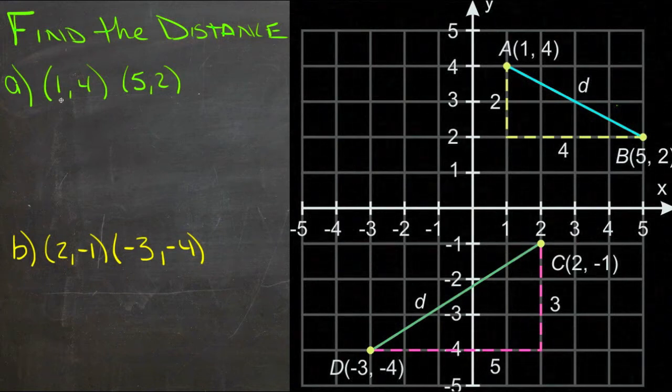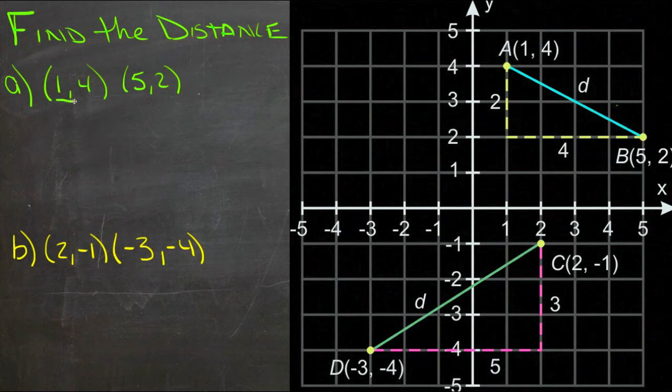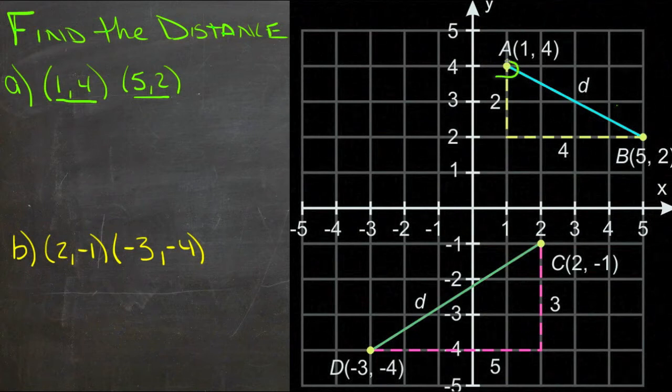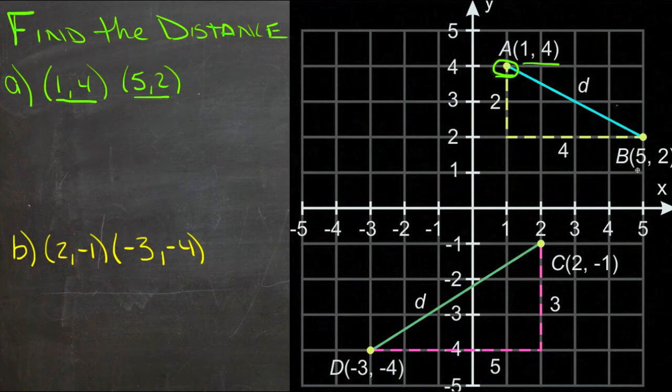The first thing we're doing is finding the distance between point (1,4) and point (5,2). So point (1,4) is right here, up here on the top, (1,4). And then point (5,2) is right here, (5,2).